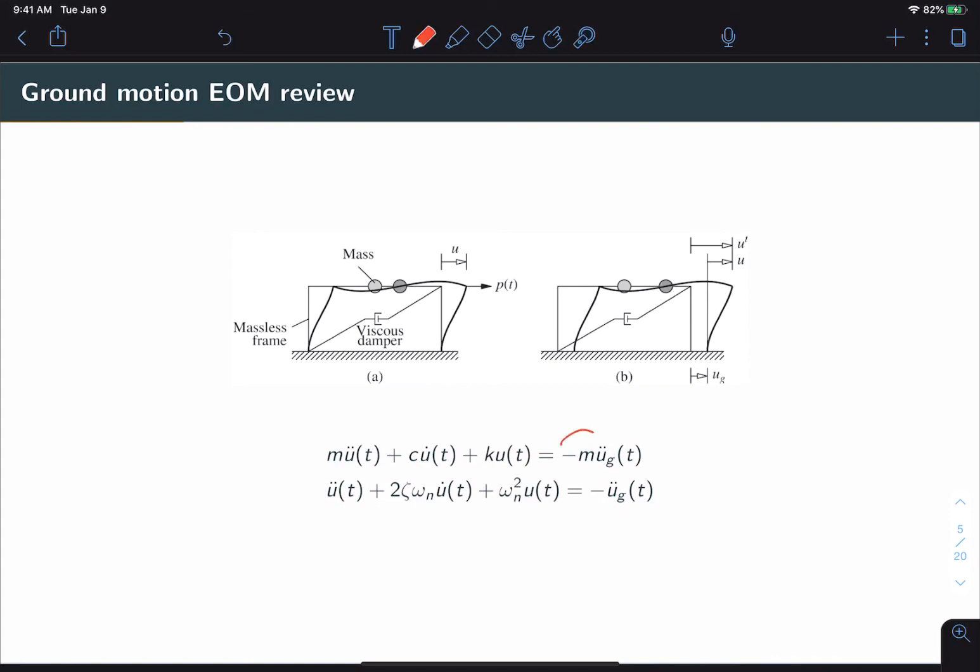Now, the important thing to recall is that we expressed the effective force as a function of the ground acceleration U double dot G. We can take this one step further and divide out by M in order to get an equation that is completely free of any physical parameters. And it's expressed entirely in terms of the ground motion, the damping ratio, and the natural frequency. This will be important because we want to generalize beyond systems with specific mass, stiffness, and damping.